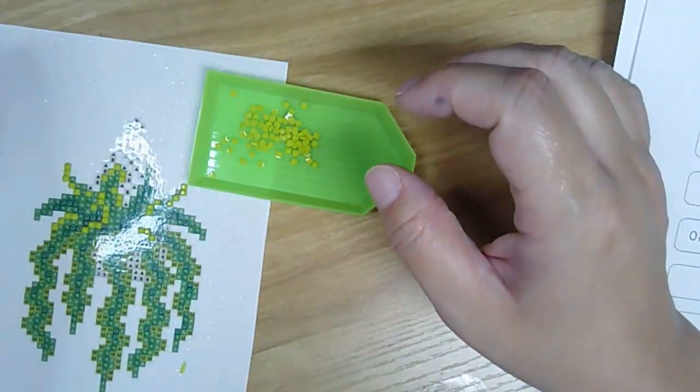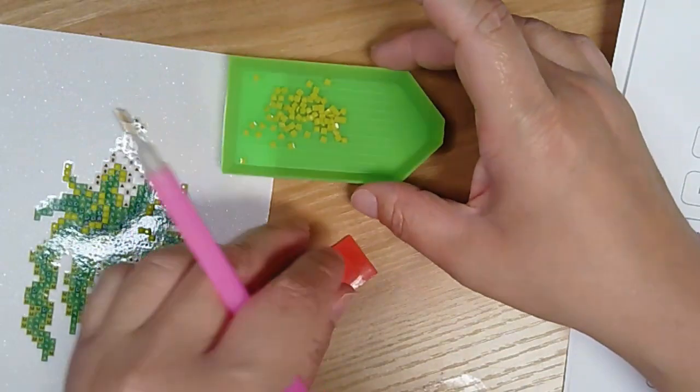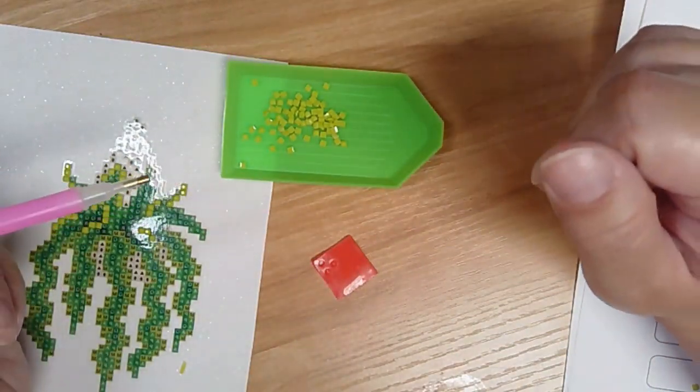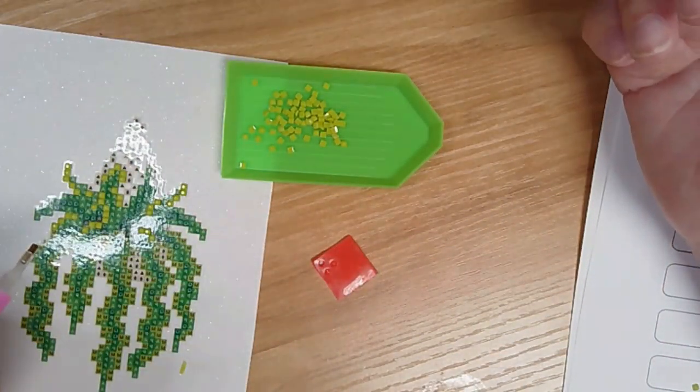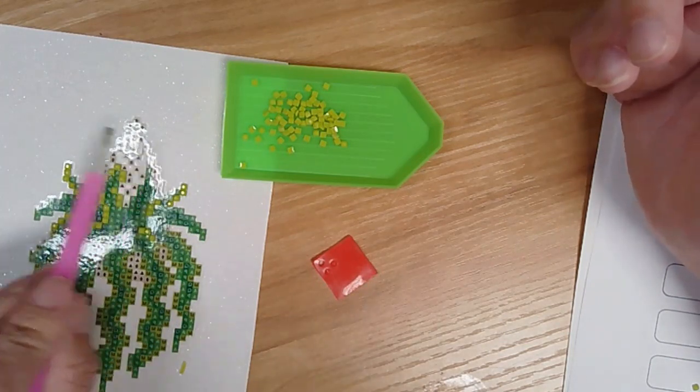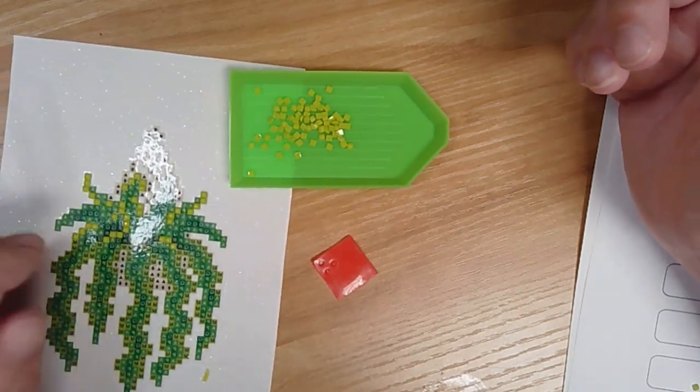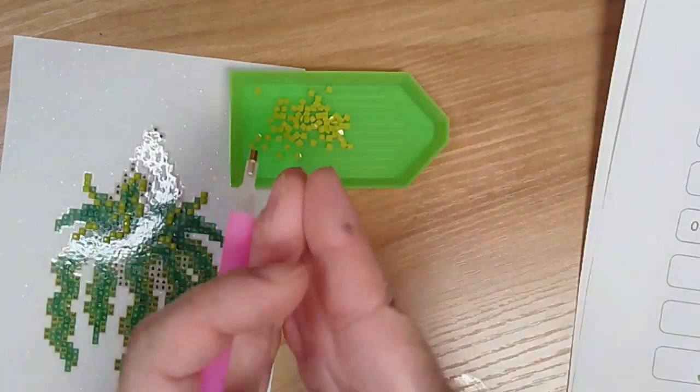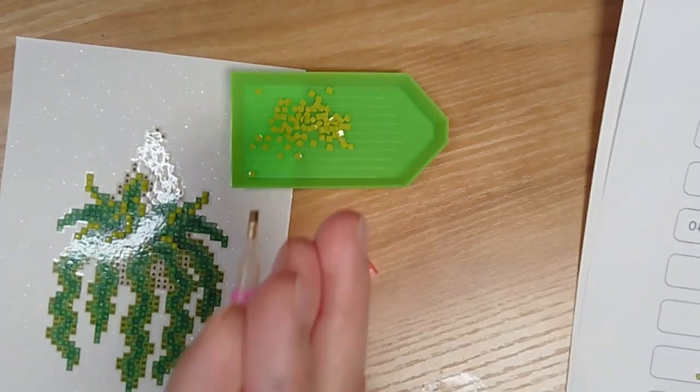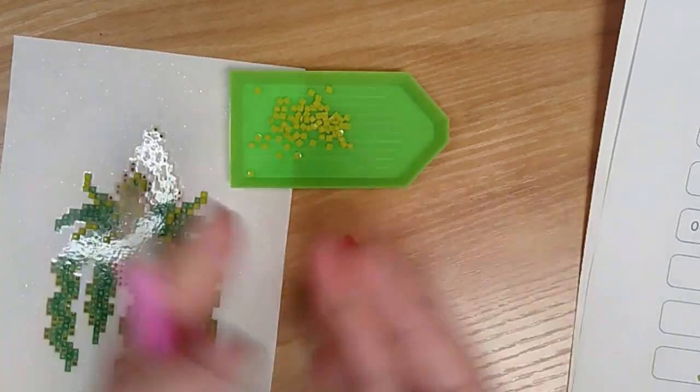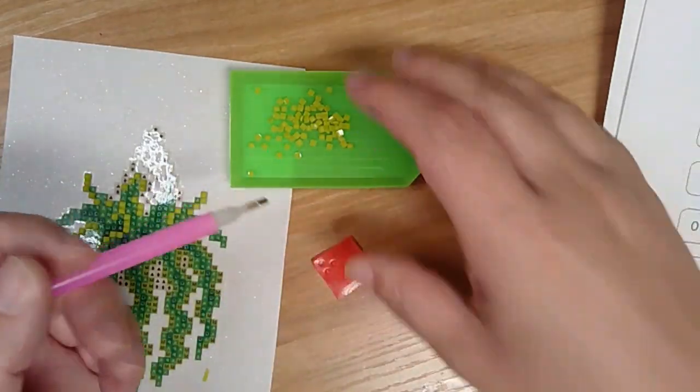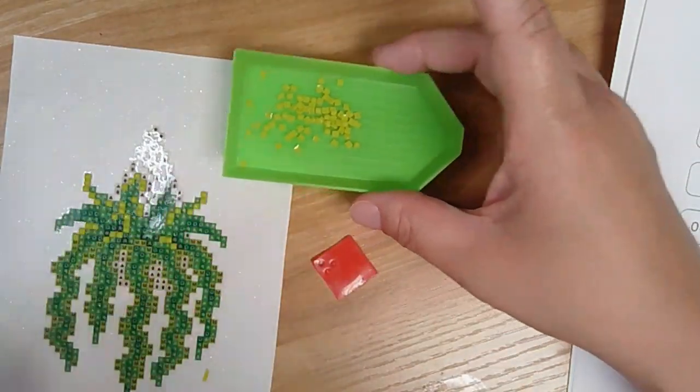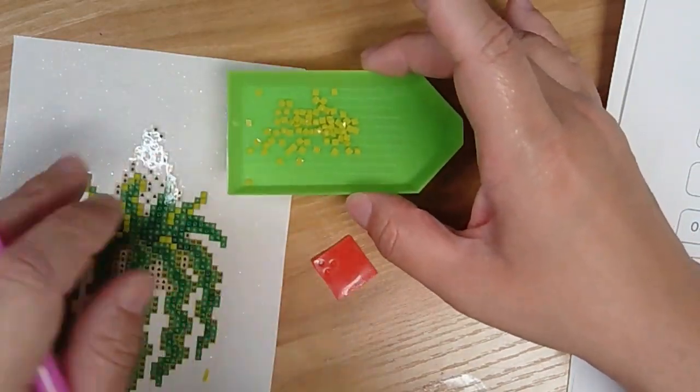It's up to you if you want to work one color at a time or if you want to go row by row. If you go row by row it's probably going to be a little more accurate as far as the gems being right next to each other, but I like to go color by color. Also I only have one tray, so I'm just going to put the one color in here so I don't get confused.